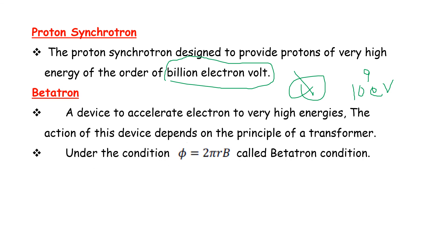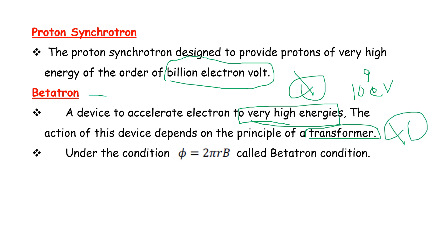Next is betatron. Betatron is a device used to accelerate electrons to very high energy. The action of this device depends on the principle of a transformer. The transformer principle is very important for betatron.